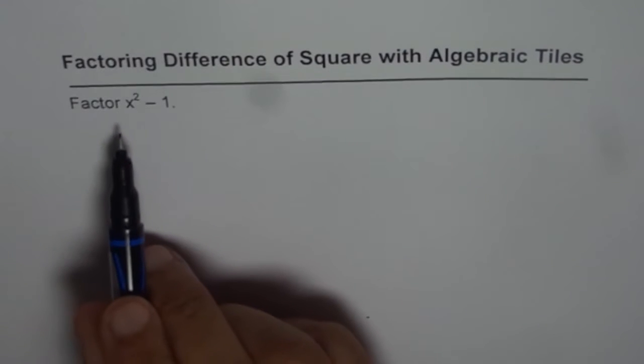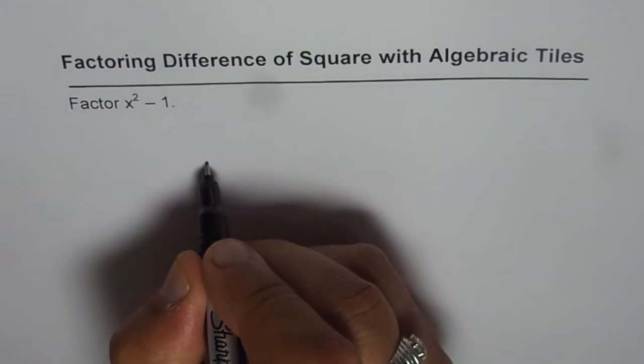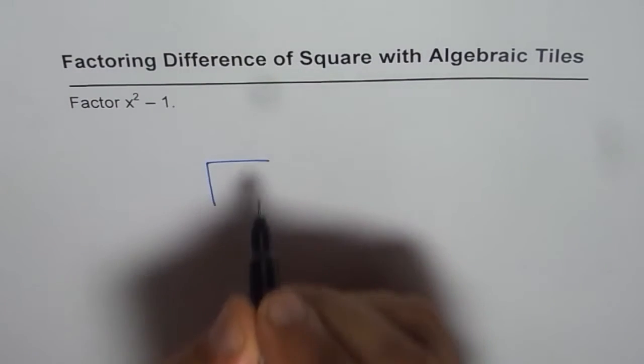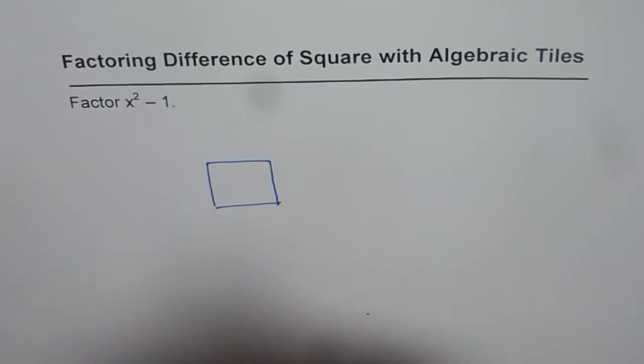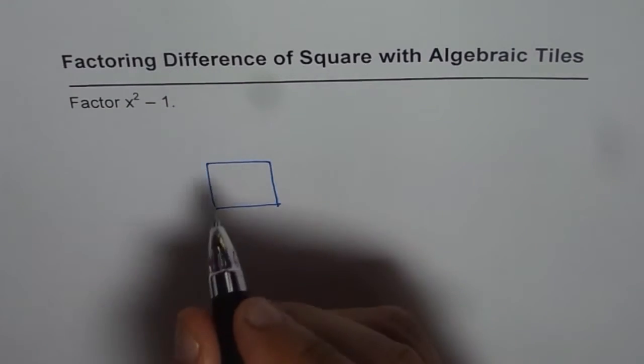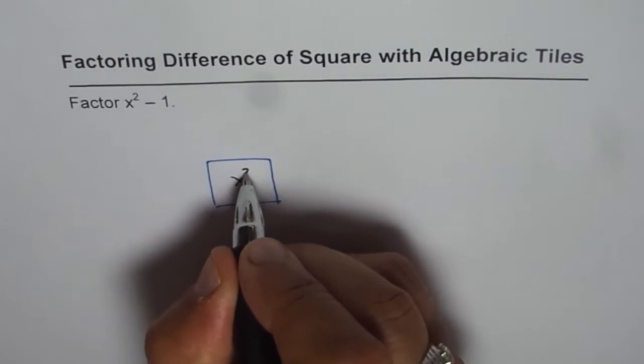So we will factor x square minus 1 using algebra tiles. Now x square, we normally take the blue tile as the square tile. So this is our x square tile. x square minus 1.